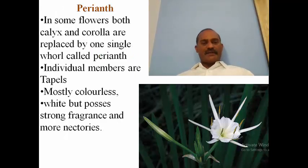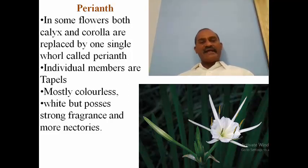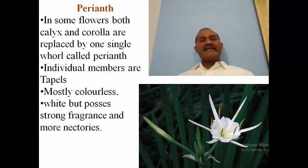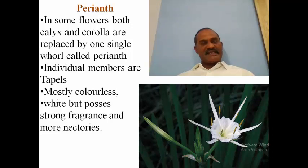In certain flowers, calyx and corolla cannot be distinguished and are replaced by a single term called perianth — meaning just outside the androecium. The individual members of the perianth are called tepals. Calyx contains sepals, corolla contains petals, and perianth contains tepals. These tepals are generally colorless but contain numerous nectaries and fragrance-producing glands, because most plants with perianth blossom at night and are pollinated by insects attracted to white color, fragrance, and nectaries.